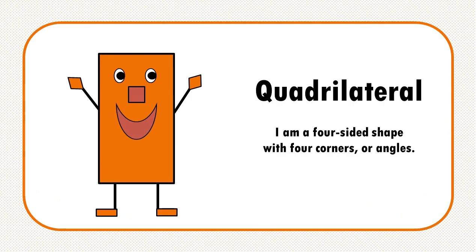Hello, I'm a quadrilateral. I am a four-sided shape with four corners, or angles. It's kind of confusing, because sometimes I'm called a square, or a rhombus. The rhombus is sometimes called a diamond. I'm also called a rectangle. I have four sides.